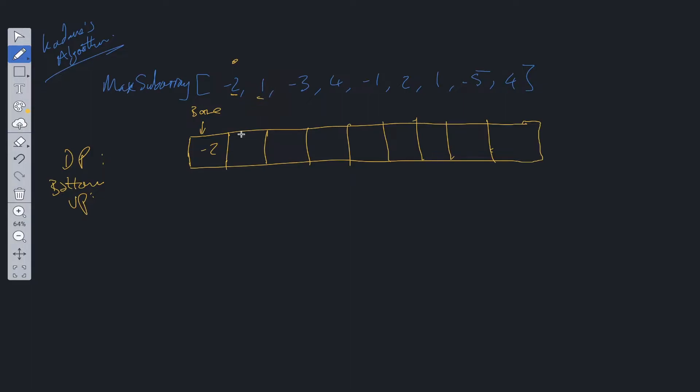At position 1, what is the maximum solution we can take? Well, we can either take the solution to the previous subproblem plus this value right here, or we can just take this value. So it can be minus 2 plus 1, which is minus 1, or 1. So we take the largest, so we take 1. Then we move on to the next value.